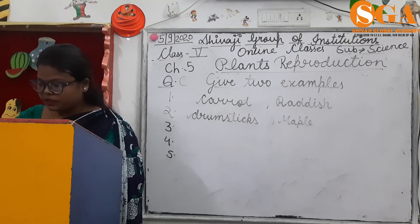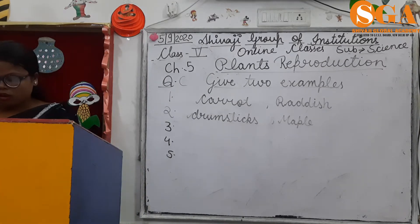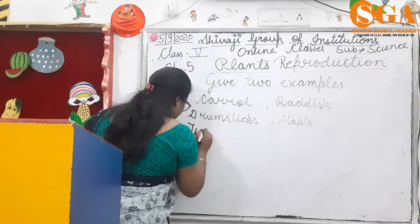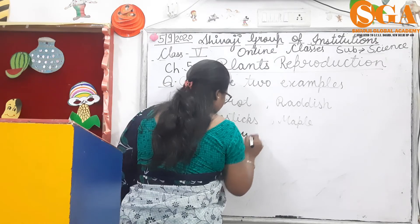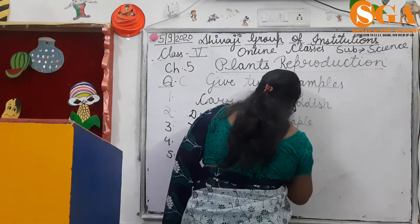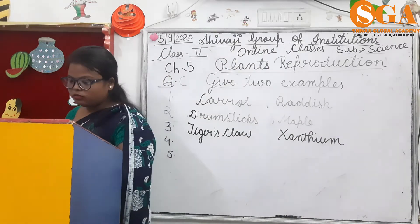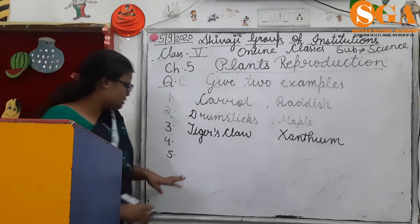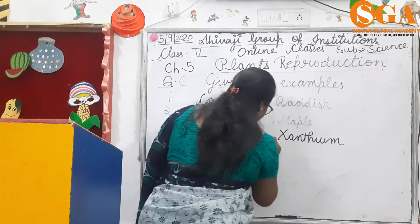Third: seeds dispersed by animals — tiger's claw and xanthium. And the fourth one is plants that can be grown from stem cutting. The answer is rose and hibiscus.